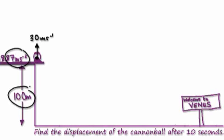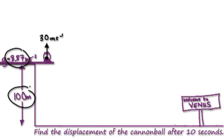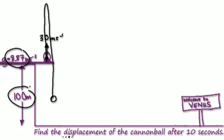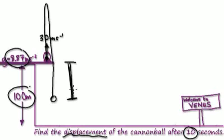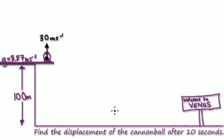The moment after firing the cannonball, you're going to retract this plank. The cannonball will shoot up to its maximum height and then it will free fall. Calculate the displacement of the cannonball after 10 seconds — that's this distance here. So we'll calculate the displacement after 10 seconds.